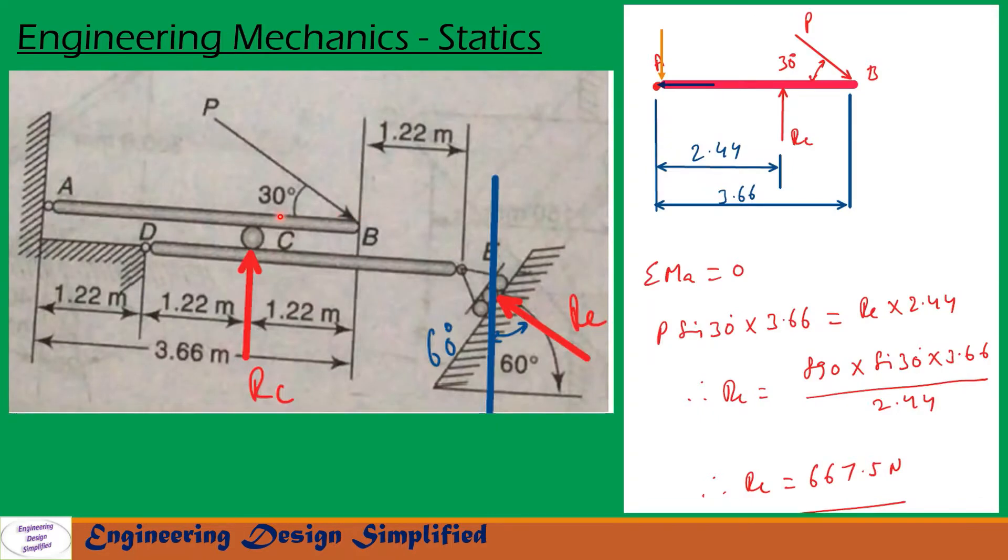First, let us see free body diagram of beam AB. So at the end A, there is a hinge. At the end B, there is a force P applied at an angle 30 degrees to the horizontal, and at C, there is a roller here. So let us see free body diagram here.